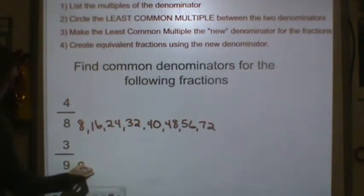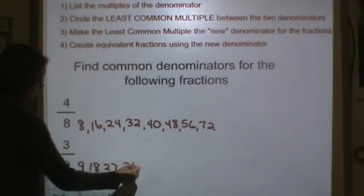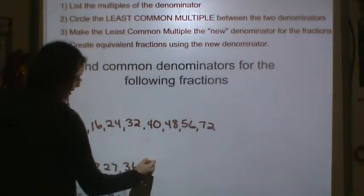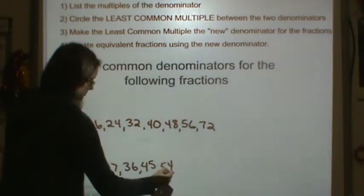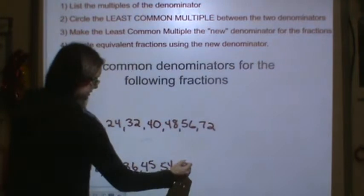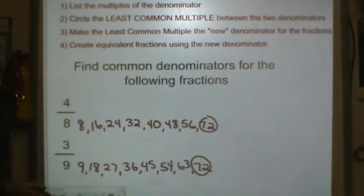9 is 9, 18, 27, 36, 45, 54, 9 times 7 is 63, and 72. So we finally have a common multiple. So we circle it.